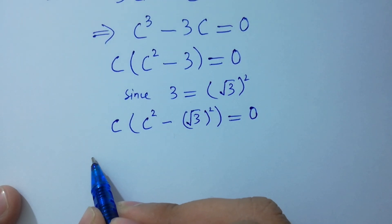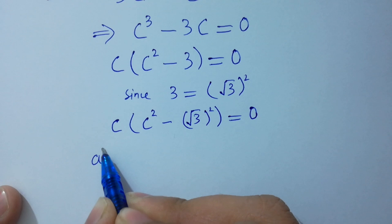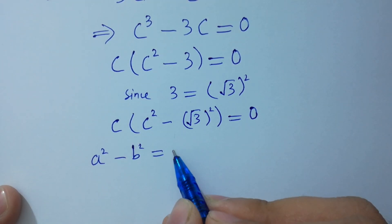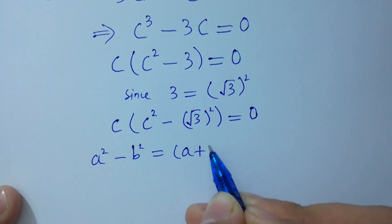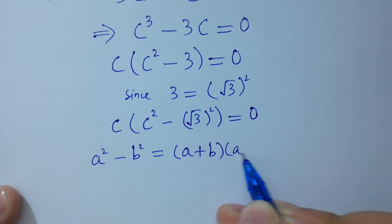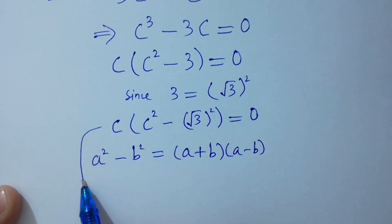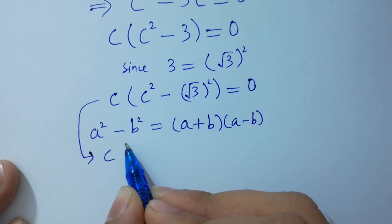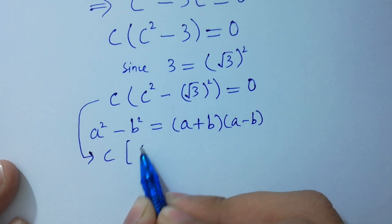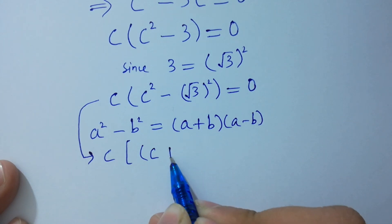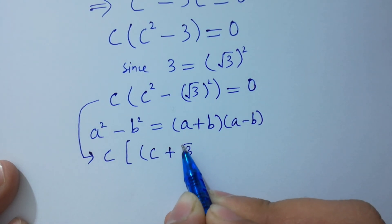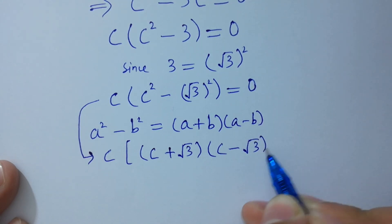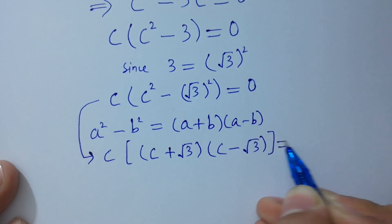As we know that a squared minus b squared is equal to (a plus b)(a minus b), so we apply this here to get c times (c plus square root of 3) times (c minus square root of 3) equal to 0.